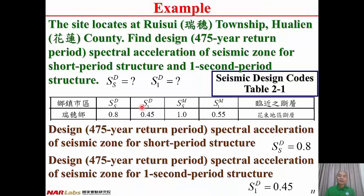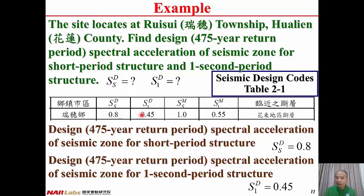Here is an example. The site is located at Yui Sui Township, Hualien County. The question is to find the design basis spectral acceleration of seismic zone for short period structure and one-second period structure — that is, to determine SSD and S1D. From Table 2-1 of the seismic design codes, looking up Yui Sui Township, we have SSD equal to 0.8G and S1D equal to 0.45G. It is close to the Huadong area fault. Therefore, the design spectral acceleration of seismic zone for short period structure SSD equals 0.8G, and for one-second period structure S1D equals 0.45G.